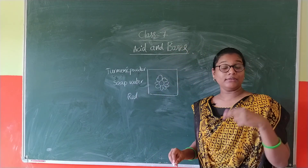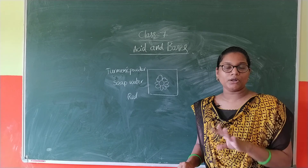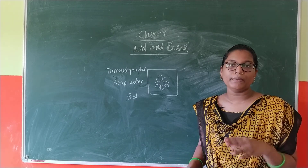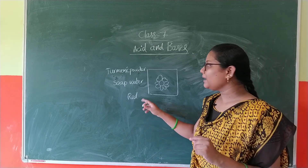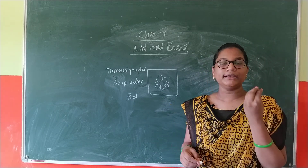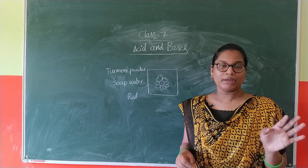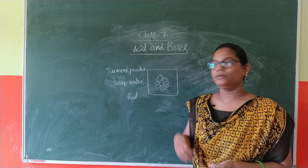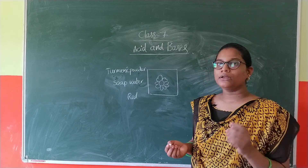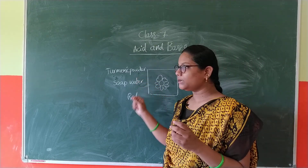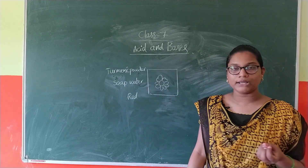To revisit the example: two people eat something and spill it on their clothes. When washing with soap, they observe a red colour spot. This is because the item spilled on the clothes was a natural indicator — it reacts with soap, which is basic, and gives a red colour spot. Turmeric gives a red colour spot with soap water.